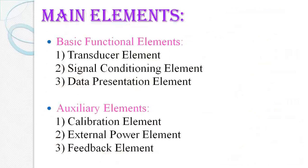The measurement system is divided into two parts. The first is basic functional elements, which contains three elements: transducer element, signal conditioning element, and data presentation element. The second is auxiliary elements, which also contains three blocks: calibration element, external power element, and feedback element. Calibration is used to generate output without error. External power supply is required for the operation and activation of the blocks. The feedback element sends part of the output back to the input.